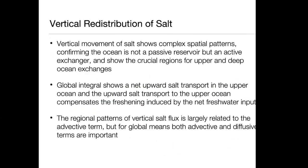Summary of the vertical salt redistribution: The vertical movement of salt shows very complex spatial patterns, confirming the ocean is not a passive reservoir — there are a lot of active processes going on inside the ocean. The crucial regions for upper and deep ocean change are highlighted, particularly the Southern Ocean and North Atlantic. The global integral shows net upward salt transport into the upper ocean, and this upward transport actually compensates the freshening induced by net freshwater input related to glacier melting. The regional pattern is largely determined by the advective term; the diffusive term is not that important regionally, but becomes significant in the global integral.